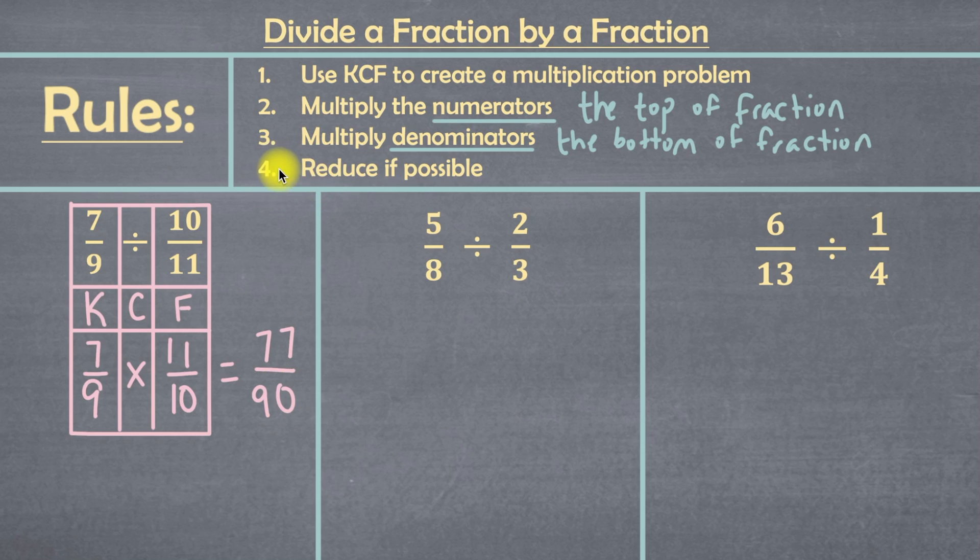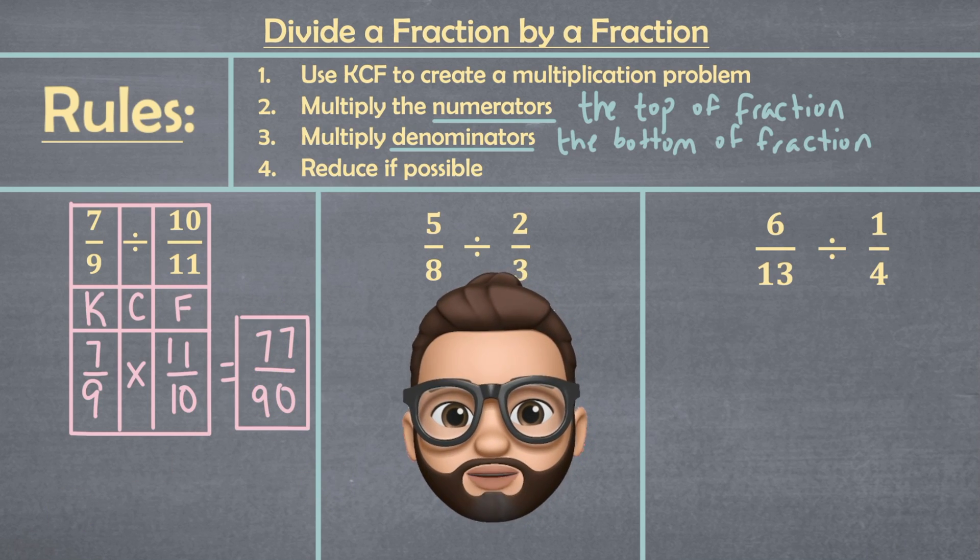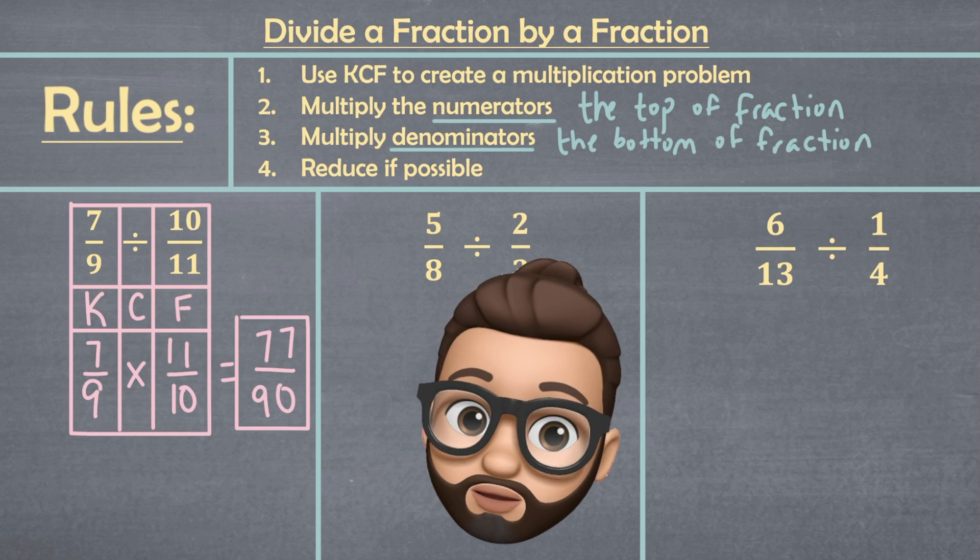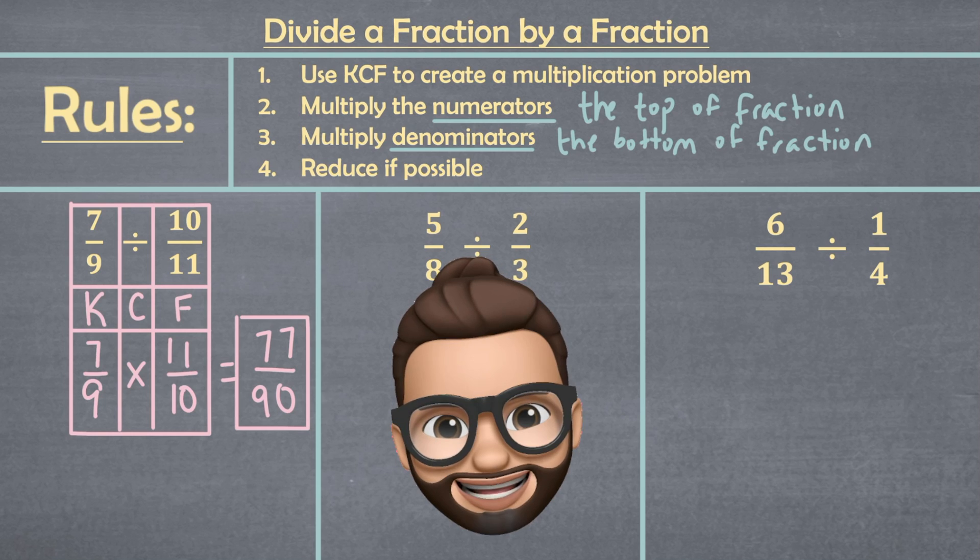Then we can go to rule number 4, which is to just reduce if possible. That means that we would look and see if the top and bottom have some number that can divide both of them. But since that's not the case here, we're done. And our final answer is 77 over 90. So now that you've seen how it's done, why don't you try the next example on your own. But before you do, make sure you smash that like button.